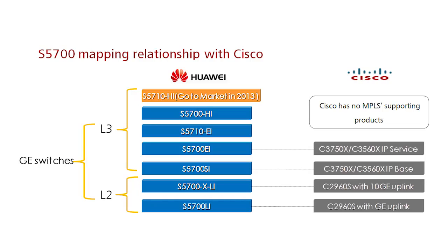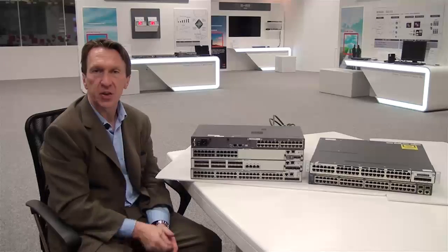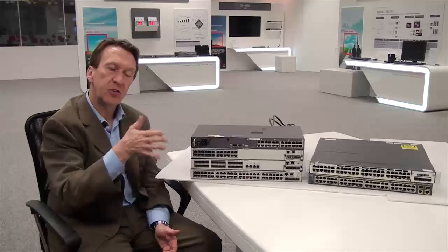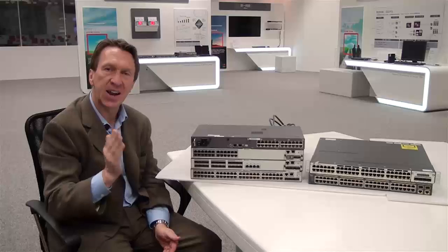The S5710 HI also offers 4 slots of flexible card support that can be used for either 16 gig ports, 4 10-gig ports, or 4 40-gig ports. Let's conclude by looking at a table that summarizes the key capabilities of the EI, HI, LI, and SI.